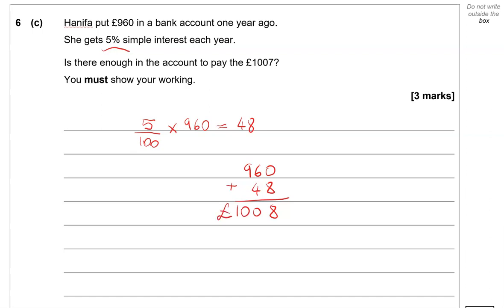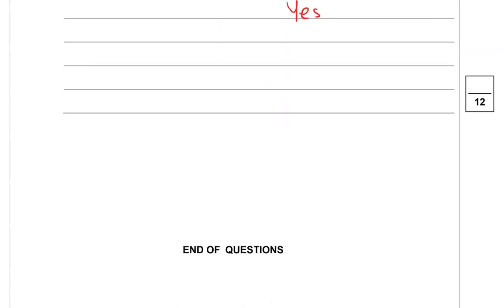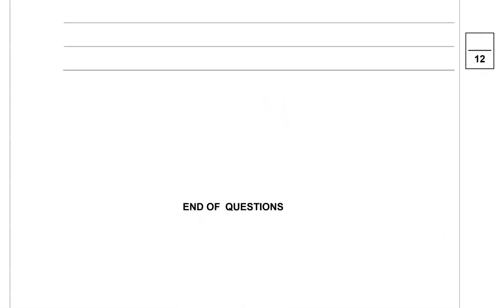we get £1008. So is there enough in the account to pay the £1007? We get £1008. Yes, because it's £1008, so one pound more. And this is the end of this paper.